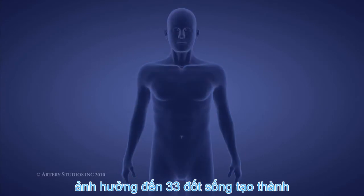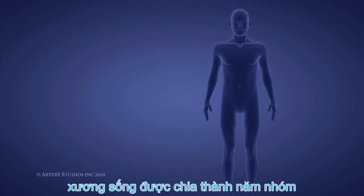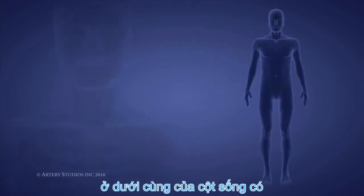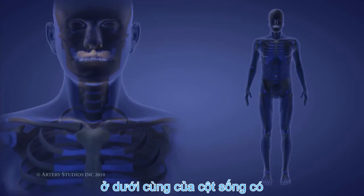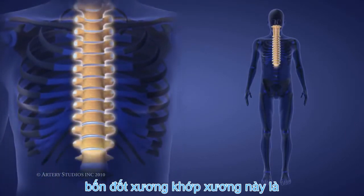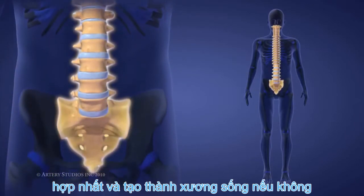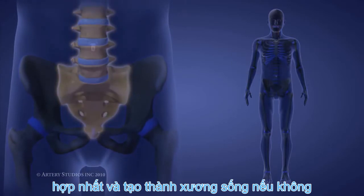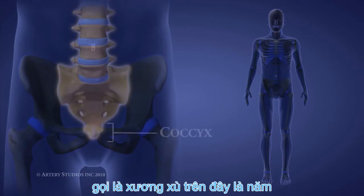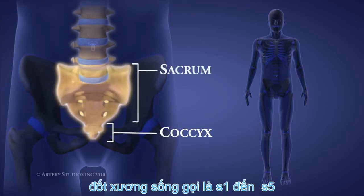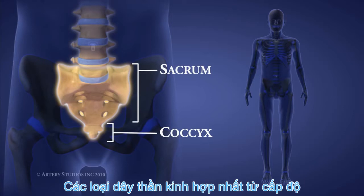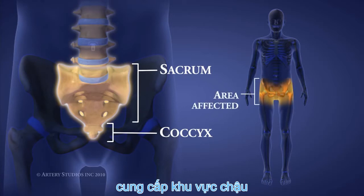The 33 vertebrae that make up the spine are separated into 5 groups. At the bottom of the spine, there are 4 coccygeal vertebrae. These bones are fused and make up the tailbone, otherwise known as the coccyx. Above these are 5 sacral vertebrae called S1 to S5. These are also fused. Nerves from this level supply the pelvic region.